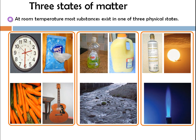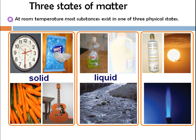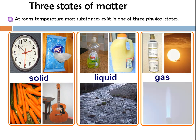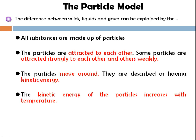There are examples in our daily life of solid, liquid, and gaseous phases. The difference between solid, liquid, and gaseous phases can be explained by the particle model. All substances are made up of particles, and particles are attracted to each other — some strongly and some weakly. When the particles move around, they are described as having kinetic energy, and the kinetic energy of a particle increases with an increase in temperature.